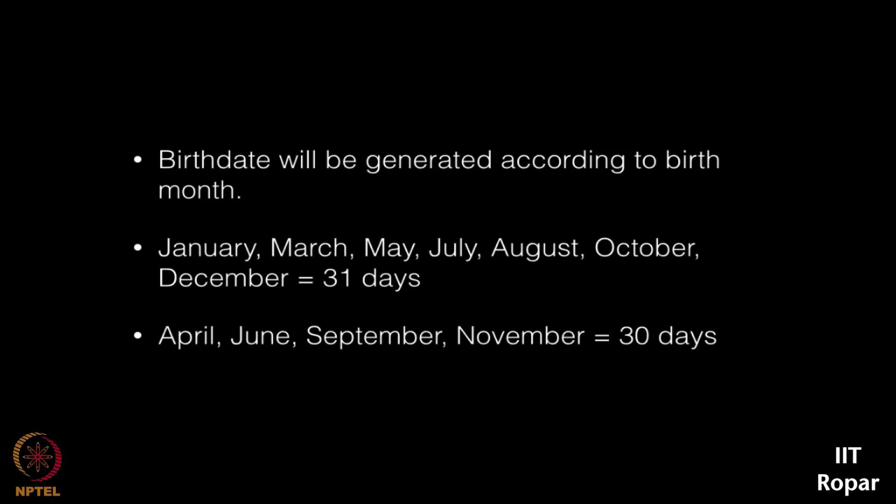We have April, June, September, November — they comprise of 30 days. Birth date will be generated according to the birth month. As we are generating only birth date, we are not concerned about the birth year. We will be only generating the date and the month.